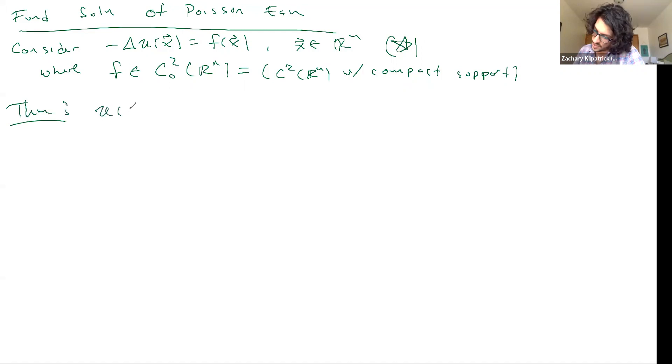And the theorem says that U(x) equals, and I'm going to use this convolution notation, φ convolved with F equals the integral over Rⁿ, φ(x-y) F(y) dy satisfies F star.